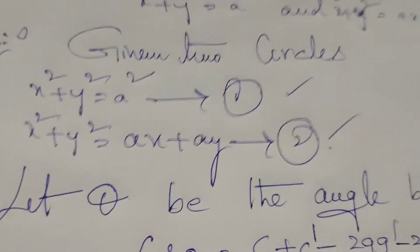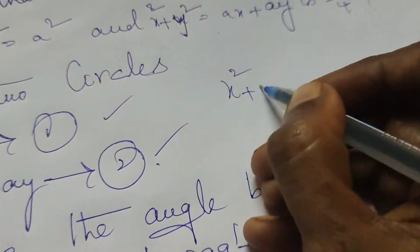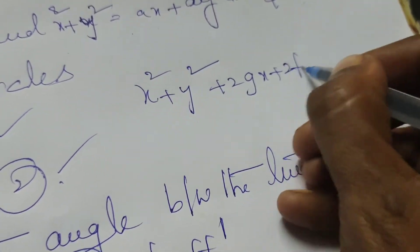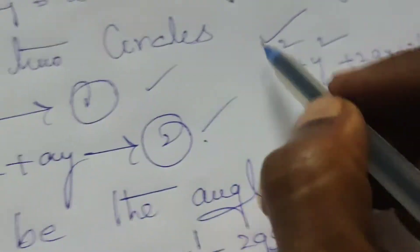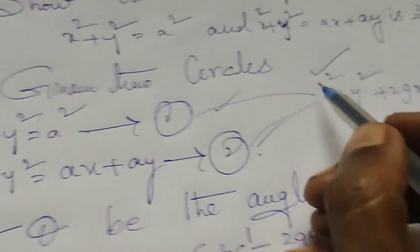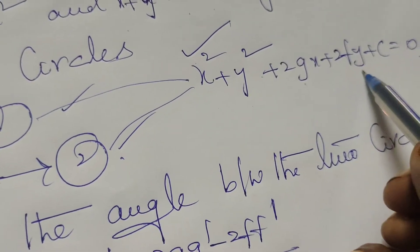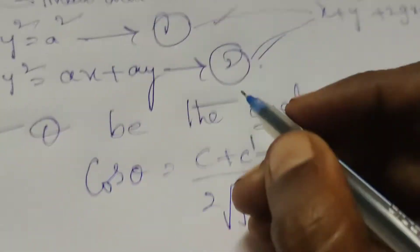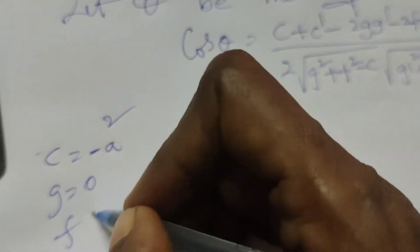Here, comparing with the standard circle equation x² + y² + 2gx + 2fy + c = 0. Comparing the first equation: there is no g and f — only constant c, which is −a². So c = −a², g = 0, and f = 0.